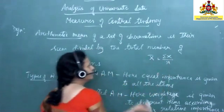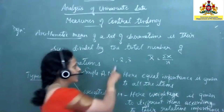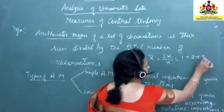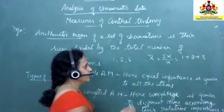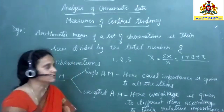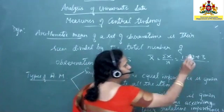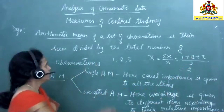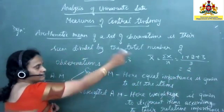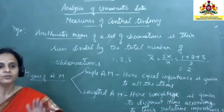So I write X̄ = ΣX / n. For example, if I have the numbers 1, 2, and 3, to get the arithmetic mean I add them: 1 + 2 + 3, then divide by n, which is 3 — the number of observations. So the answer is 2. The arithmetic mean of a group of observations is their sum divided by the total number of observations.